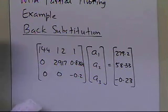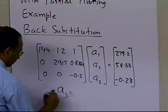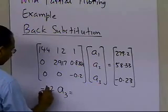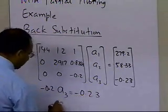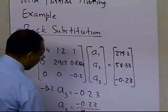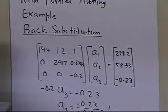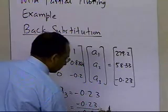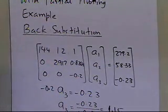From the last equation, we have -0.2 a3 equals -0.23. So a3 equals -0.23 divided by -0.2, which is 1.15. That's the value for a3.